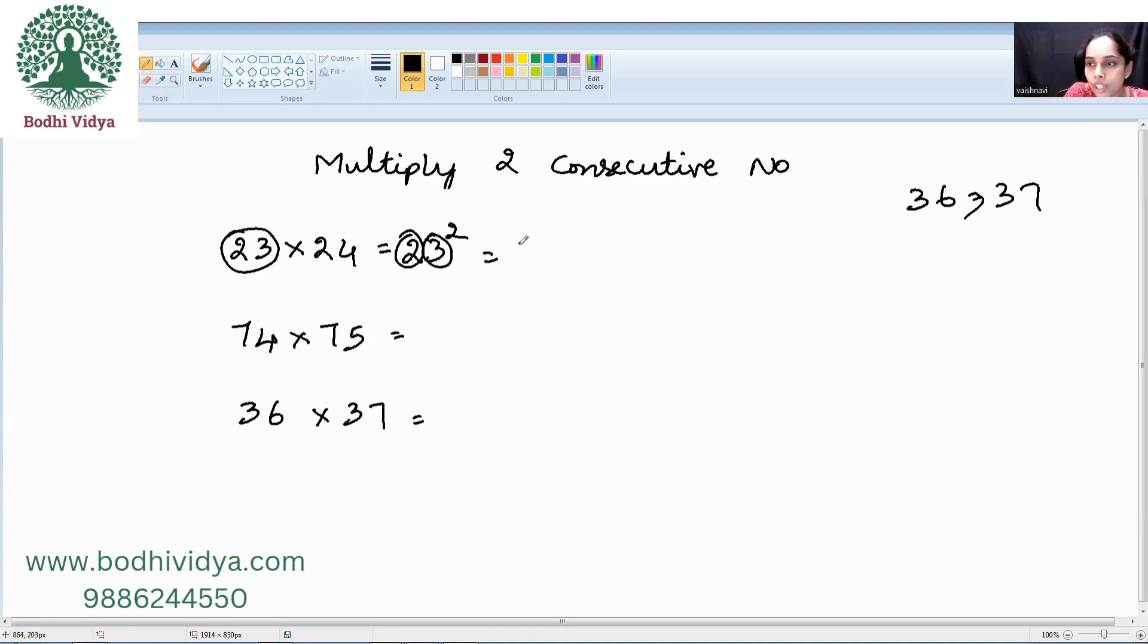Now, 2 square is 4, 3 square is 9, 2 into 3 is what? 6. 6 into 2 is what? 12. So, here we have a middle term which has 2 digits. So, I need to do a dodging. Your answer, this will be an intermediate answer and not the final answer. 5, 2, 9.